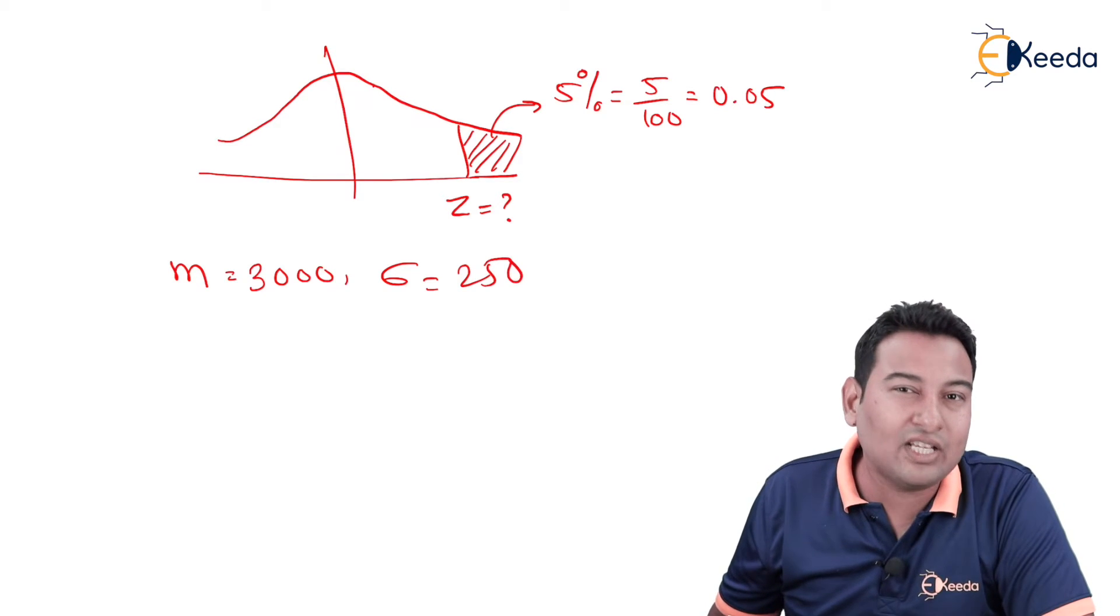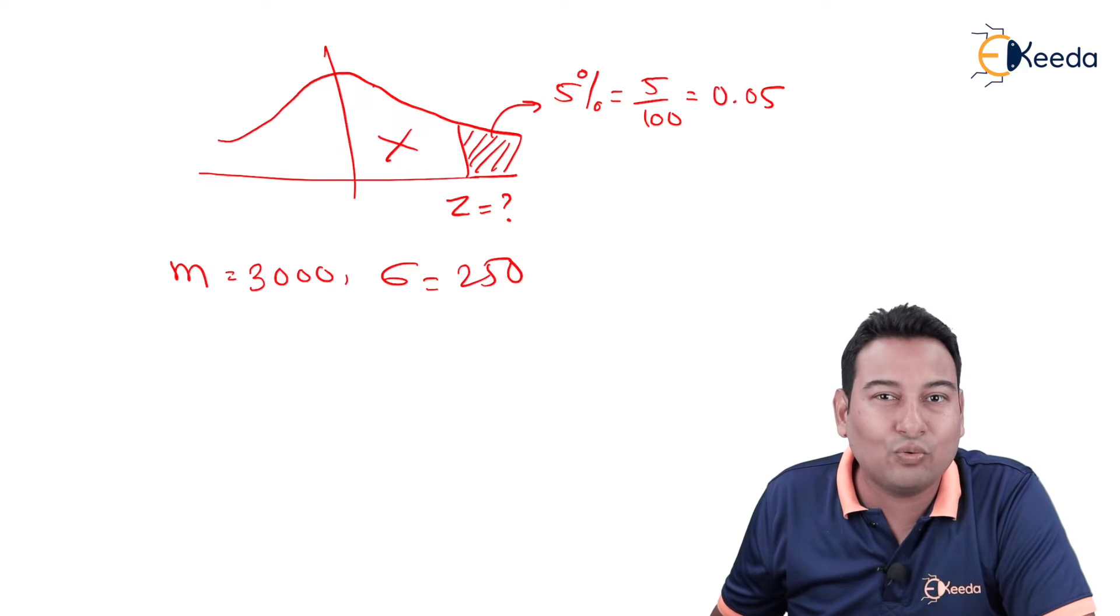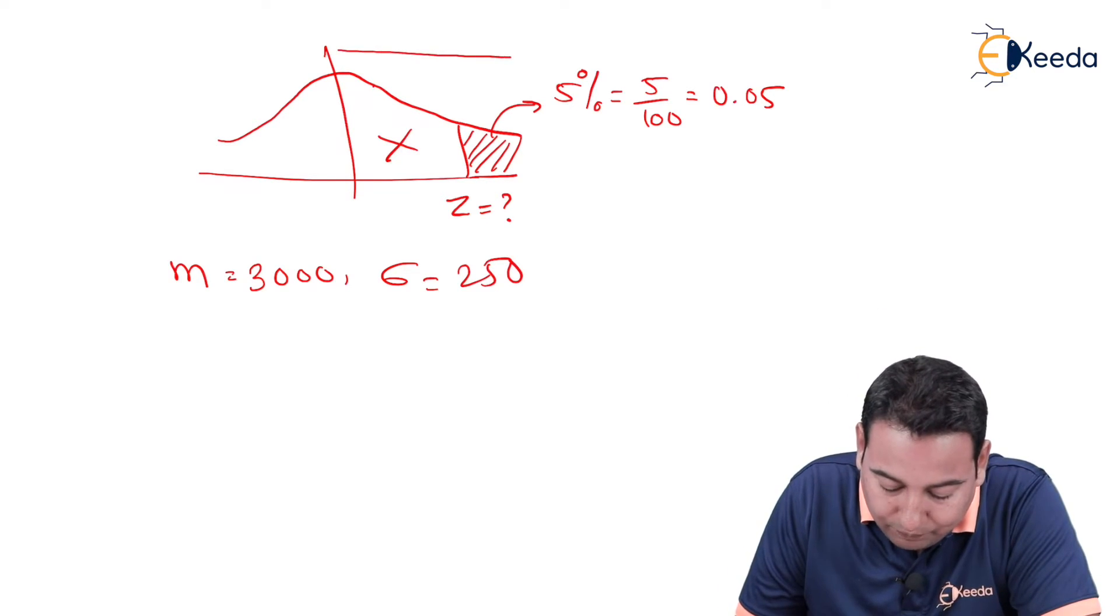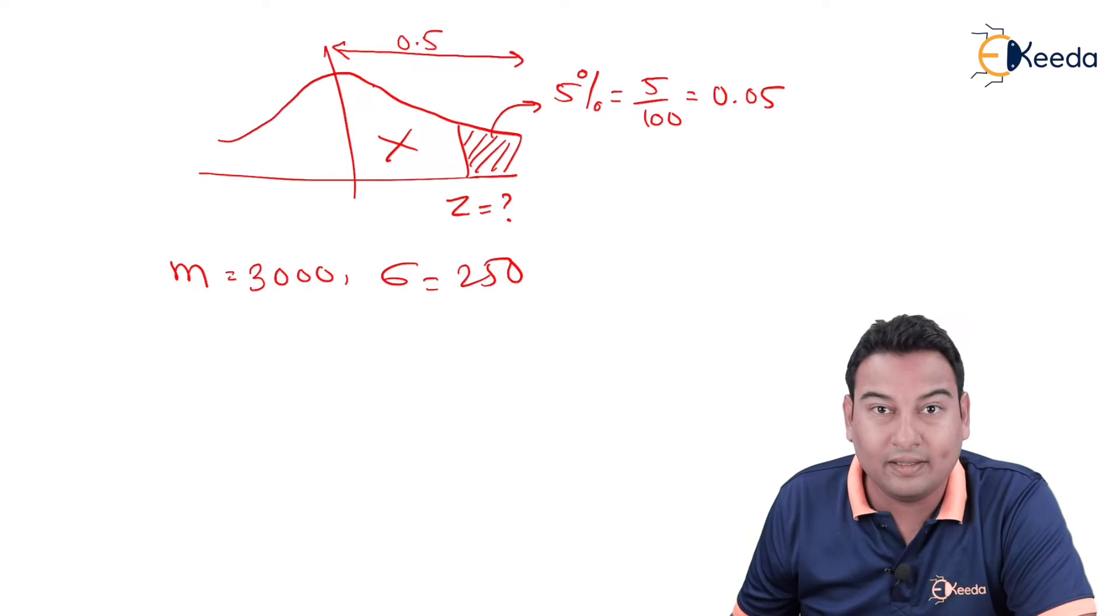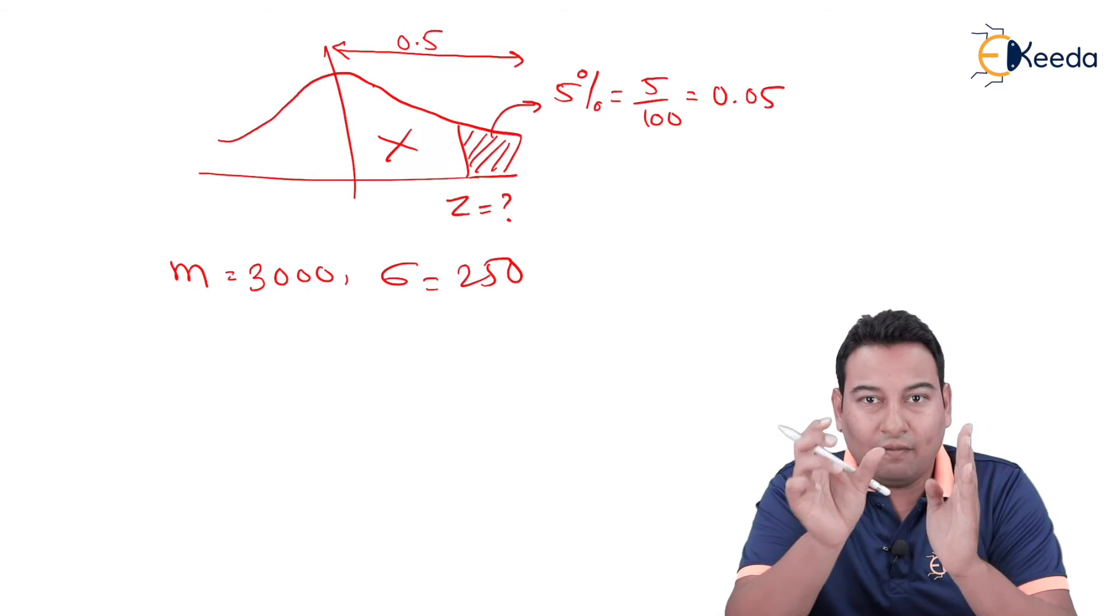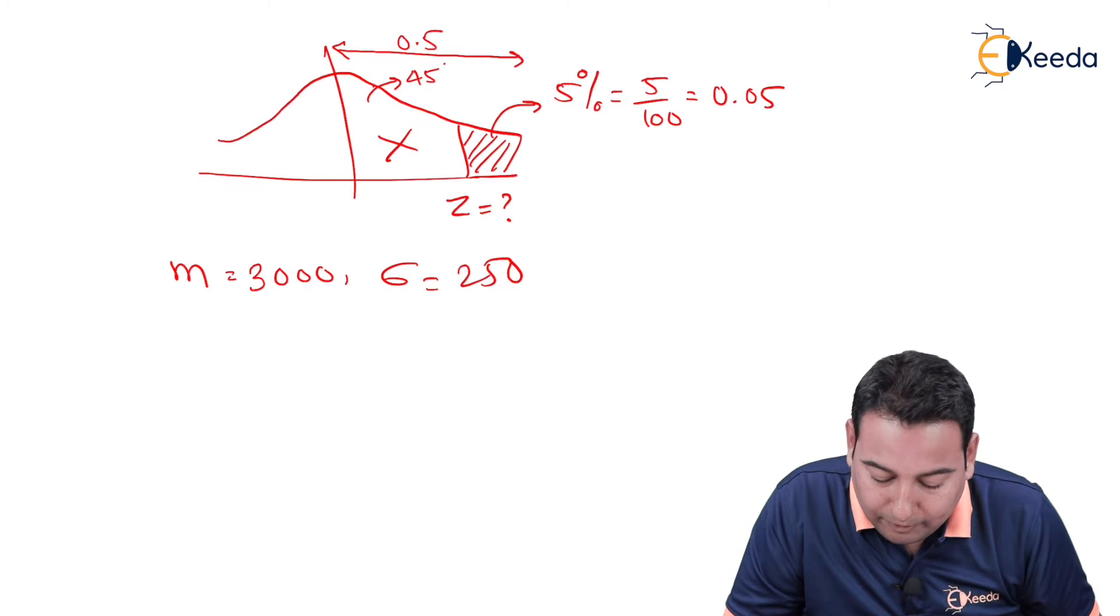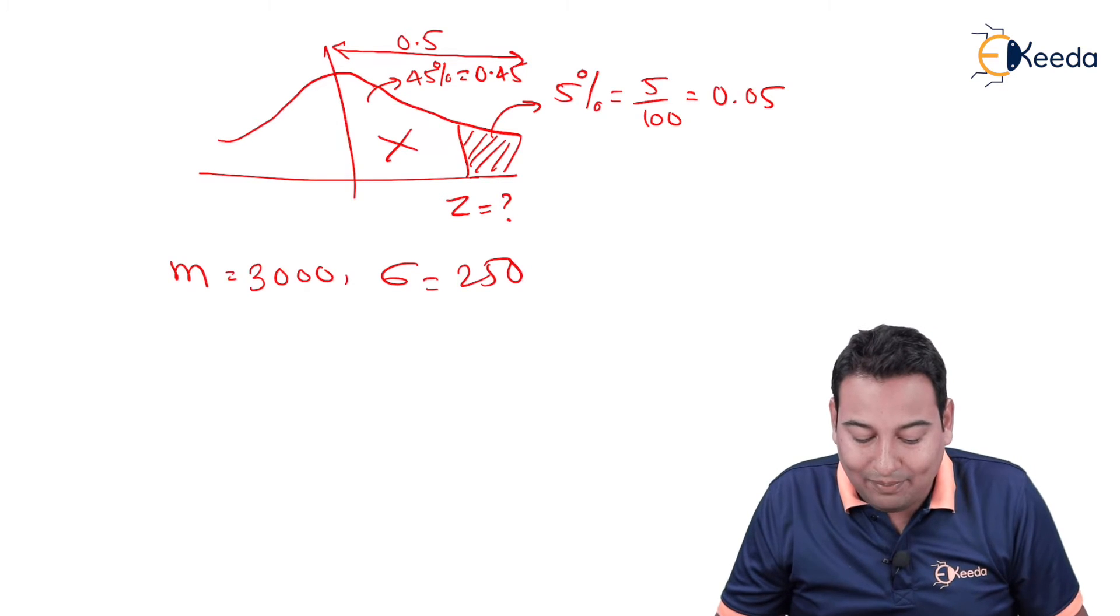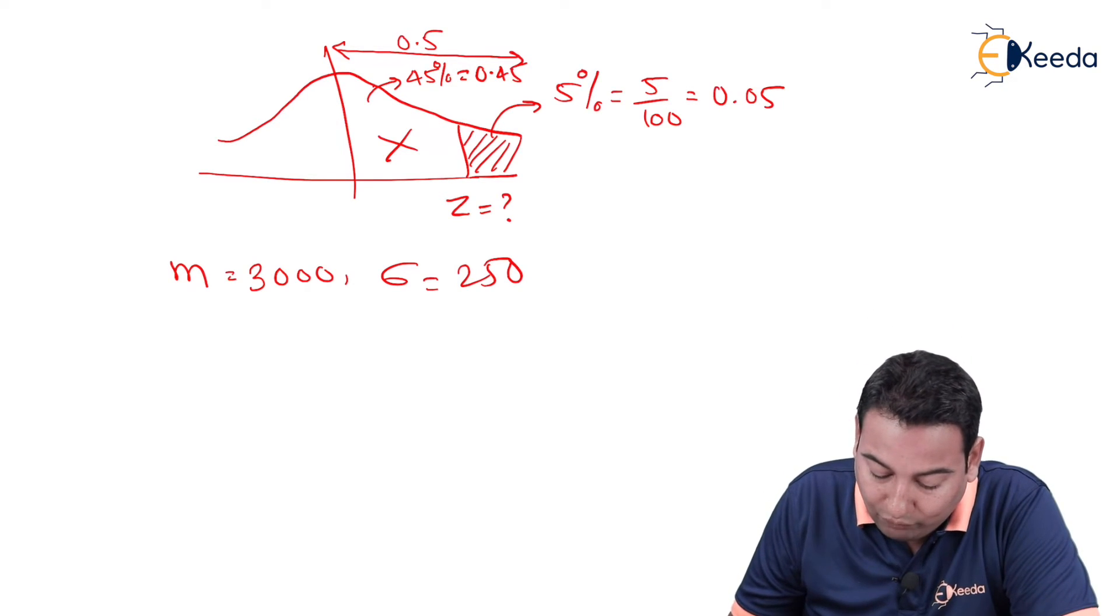Let's find out the value of Z. As discussed in the last video also, first of all you need to find this particular region so that you can go back to Z table and check the value. This value, total discussed is 50%, that is 0.5. This is 0.05. 50% minus 5%, this region has to be 45%, that is 0.45.